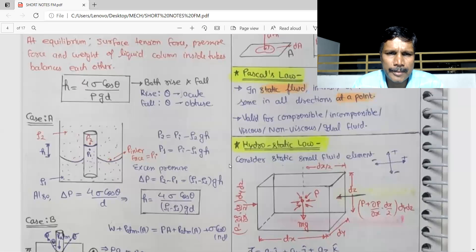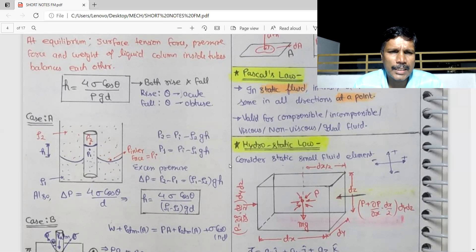Delta P is P atmospheric minus rho2 g h. Now the formula is 4 sigma cos theta by rho g d, rho1 minus rho2 g h. We can see two liquids. One liquid is 4 sigma cos theta by rho g d. Two liquids come into the picture: 4 sigma cos theta, open the bracket, rho1 minus rho2 g h.